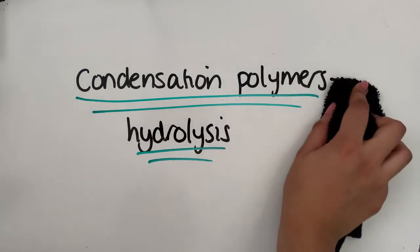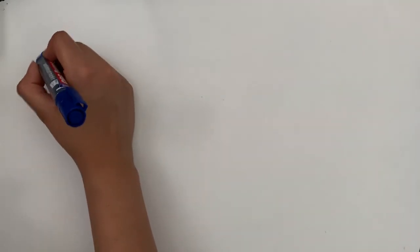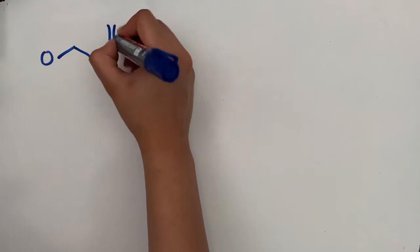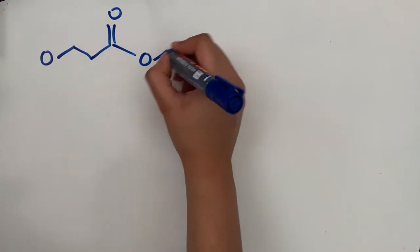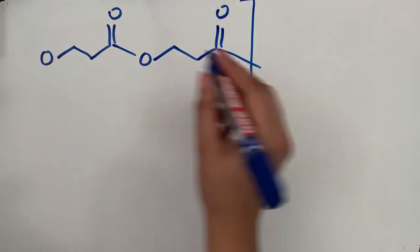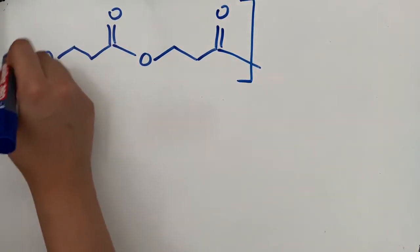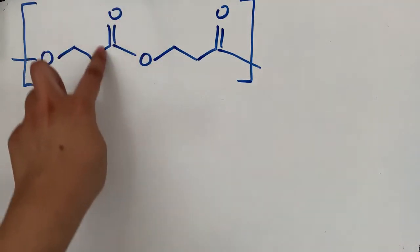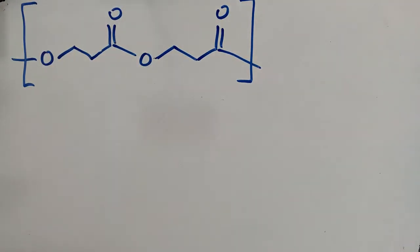First I'm going to start off by looking at a polyester, and we're going to do the hydrolysis of that polyester. I'm just going to draw out part of that polymer, and we know this is a polyester because we have that ester bond present over here.